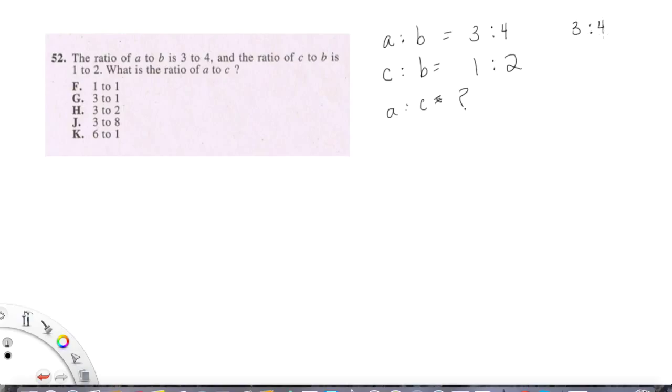So for instance, we could leave this as 3 to 4, with A to B still, and then we could change this other one. 1 to 2 is the same thing as 2 to 4, or 4 to 8, or 200 to 400. So C to B equals 1 to 2 is the same thing as saying C to B equals 2 to 4. So we've just changed B so that it's the same thing.